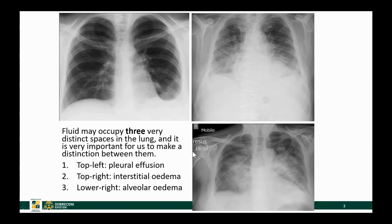For now, let's go on and talk about fluid within the human body and in the human chest cavity. Fluid in our bodies can occupy three distinct spaces: first, it can be in the pleural cavity; it can be in the interstitium of the lung; or it can be within the alveolar space.